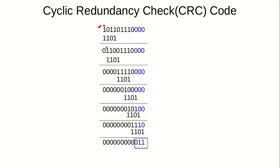Again, we search for the first one — it's at this position. We can do four consecutive bitwise XOR operations because we have four bits available. We perform the same procedure: 1 XOR 1 is 0, 1 XOR 1 is 0, 0 XOR 0 is 0, 0 XOR 1 is 1. We repeat this process for each subsequent first-one position, performing four-bit XOR each time.